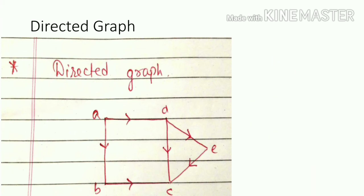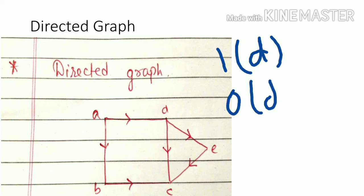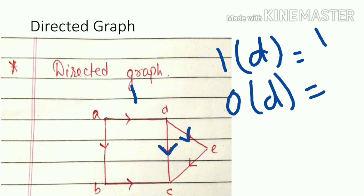Now for vertex D in the directed graph, we write the incoming and outgoing degree separately. The number of incoming edges to D is 1, and the number of outgoing edges is 2.